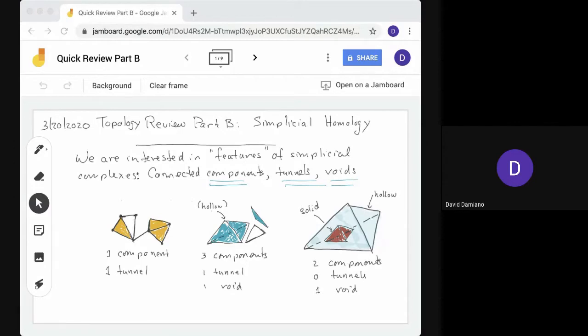Here are three examples to remind us of what's going on. On the left we see a simplicial complex in the plane has one connected component, one tunnel. The tunnel goes through the three edges that we see missing a face, so here.